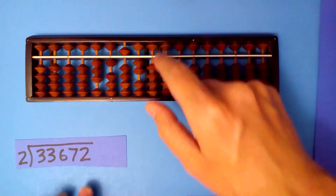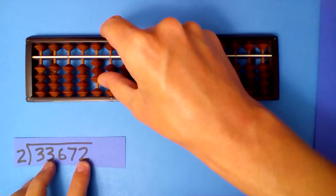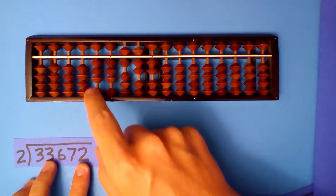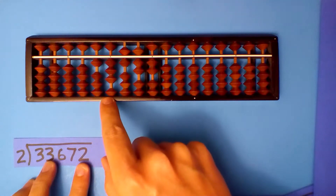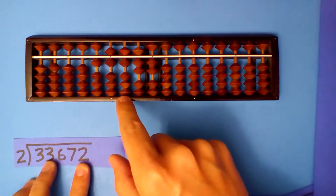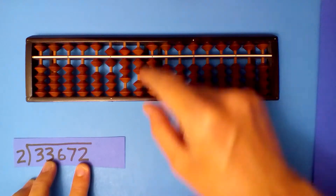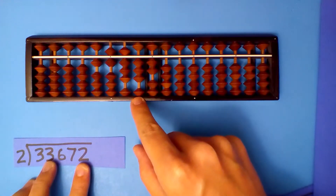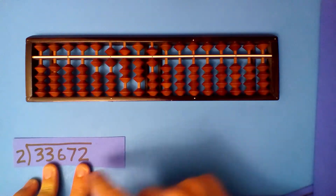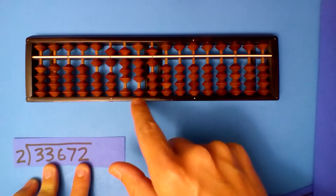One more: what's half of 33,672? Half of 3 is 1 with 1 left over. Half of 13 is 6 with 1 left over. Half of 16 is 8. Half of 7 is 3 with 1 left over. So half of 12 is 6. Half of 33,672 is 16,836.